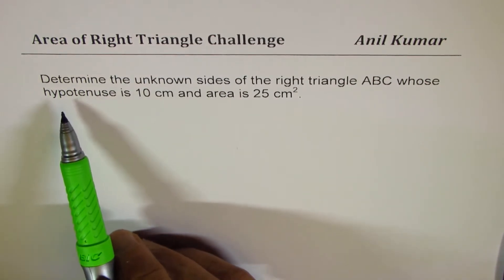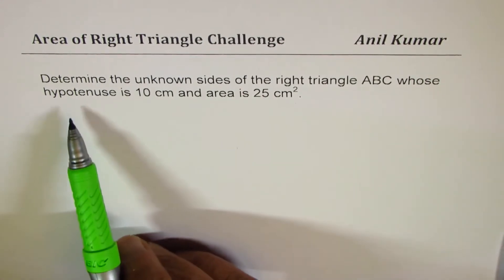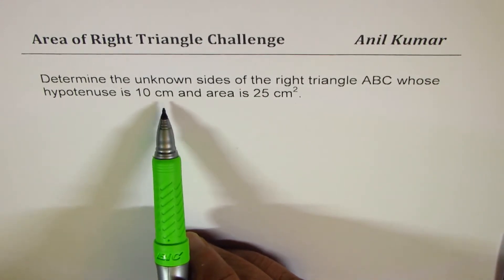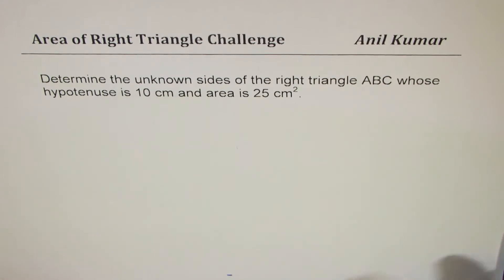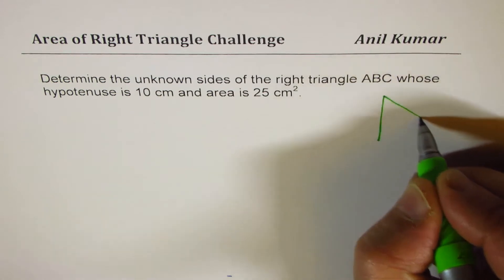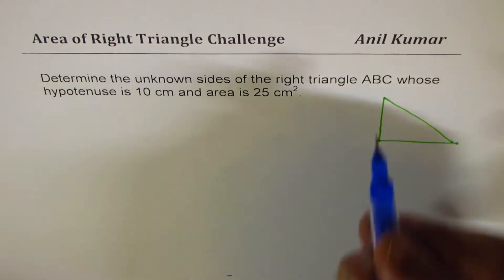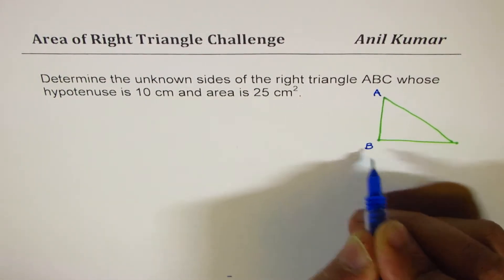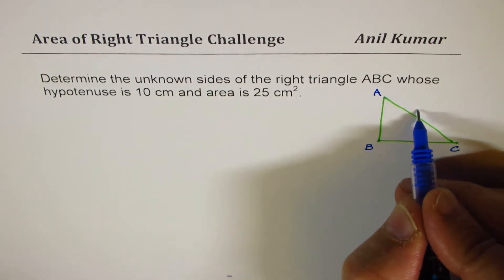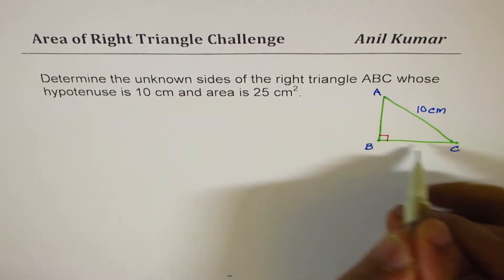The question is, determine the unknown sides of the right triangle ABC whose hypotenuse is 10 centimeters and area is 25 centimeters squared. So let me sketch one right triangle here and then we'll try to solve it. Let us say we have a triangle ABC whose hypotenuse is 10 centimeters. We need to find the length of these sides.